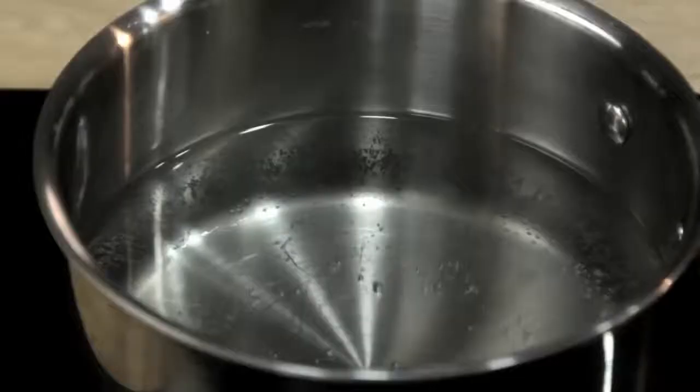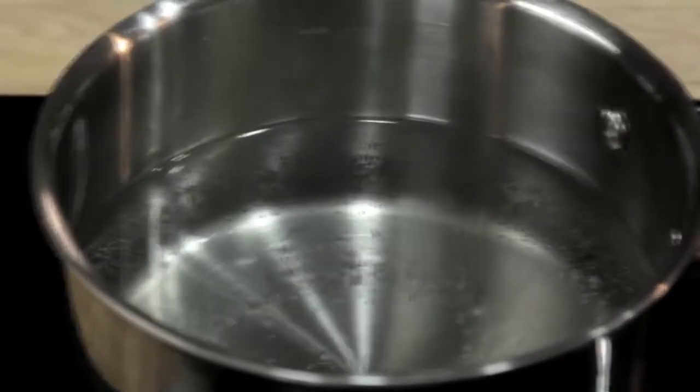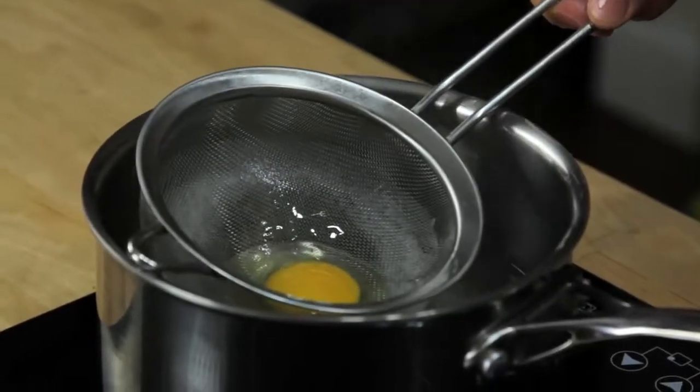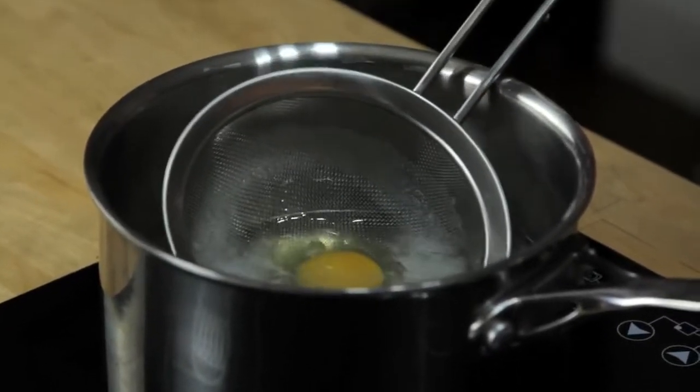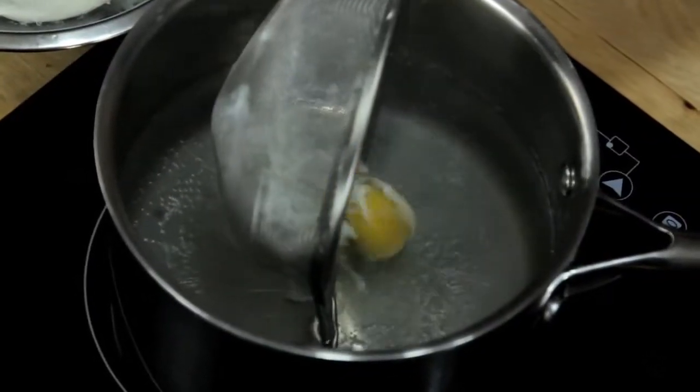Even better is that the strainer is actually the ideal tool for lowering the egg into the water. What I've got here is a pot of water at 180 degrees Fahrenheit, which is just about the temperature that the water is quivering but not quite simmering yet. All I'm going to do is gently lower the strainer with the egg into the water, move it back and forth a little bit to make sure the egg isn't stuck, and then carefully roll the egg out.